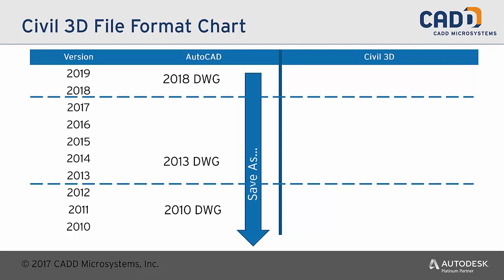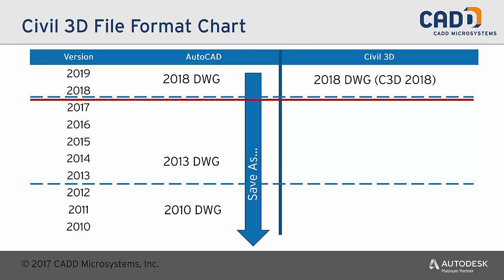However, when you get into Civil 3D and you start using Civil 3D intelligent objects — such as surfaces, alignments, and profiles — this backwards compatibility chart looks very different. The great thing is that the first line is pretty much the same. A Civil 3D drawing created in 2019 can also be used in 2018. They're based on the Civil 3D 2018 objects and, of course, on the AutoCAD 2018 DWG.